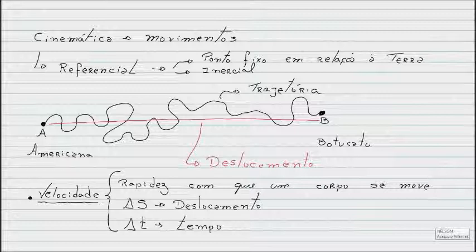Esse triângulo aqui, não é um triângulo, é a letra delta. Significa variação. Variação de espaço, variação de tempo. Partindo desta classificação, a gente calcula um termo chamado velocidade média de um corpo, que é dada pela variação de espaço, dividida pela variação do tempo. Essa é a nossa velocidade média.